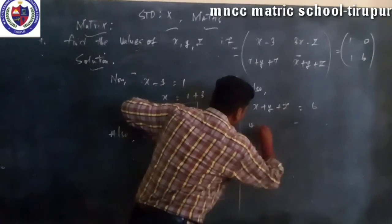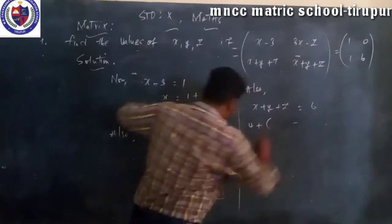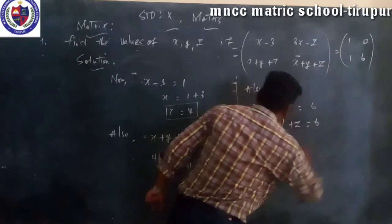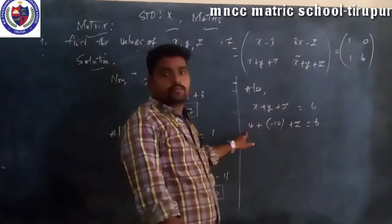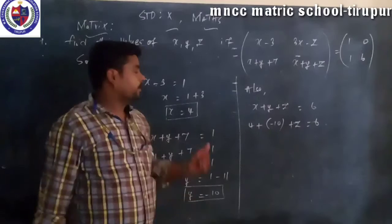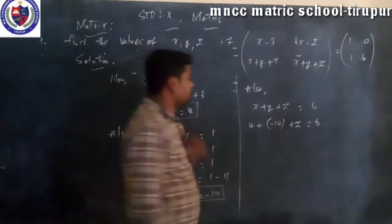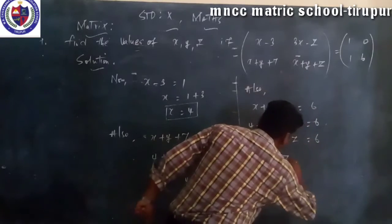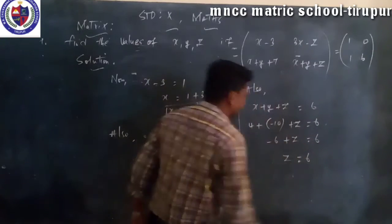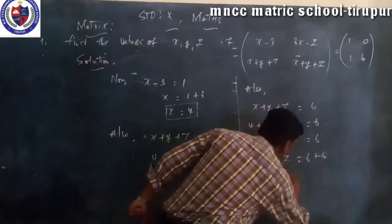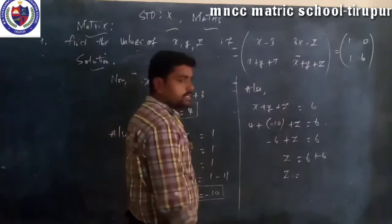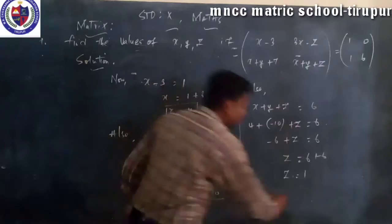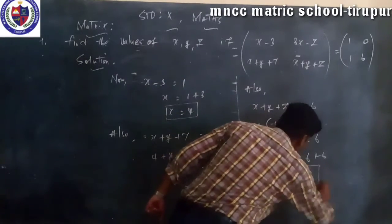4 plus minus 10 plus z equal to 6. So minus 10 plus 4 gives minus 6. So minus 6 plus z equals 6. Z equals 6 plus 6, which is equal to 12. So z equals 12.